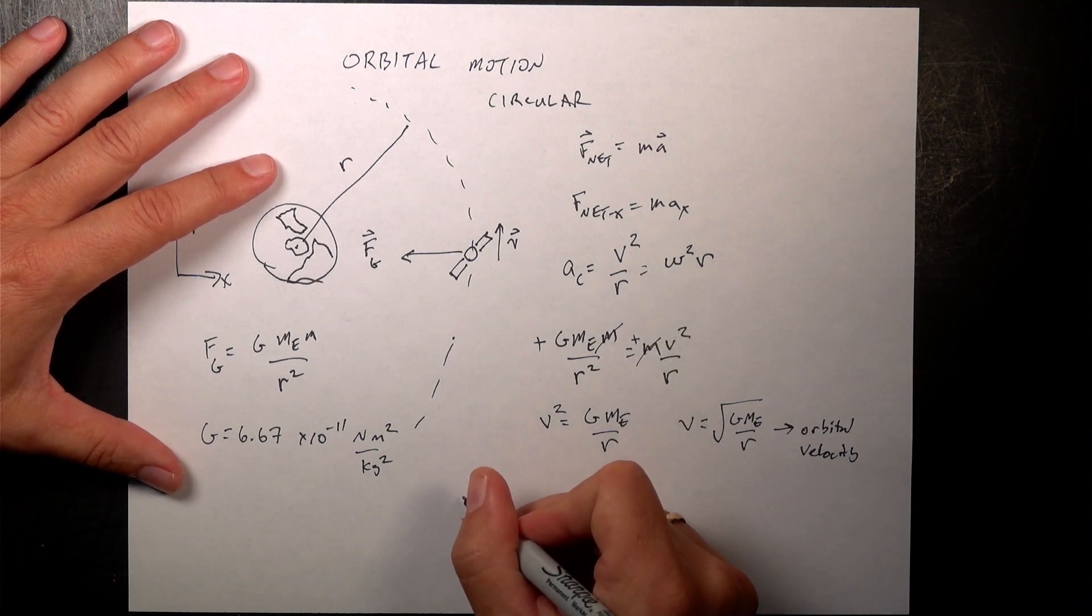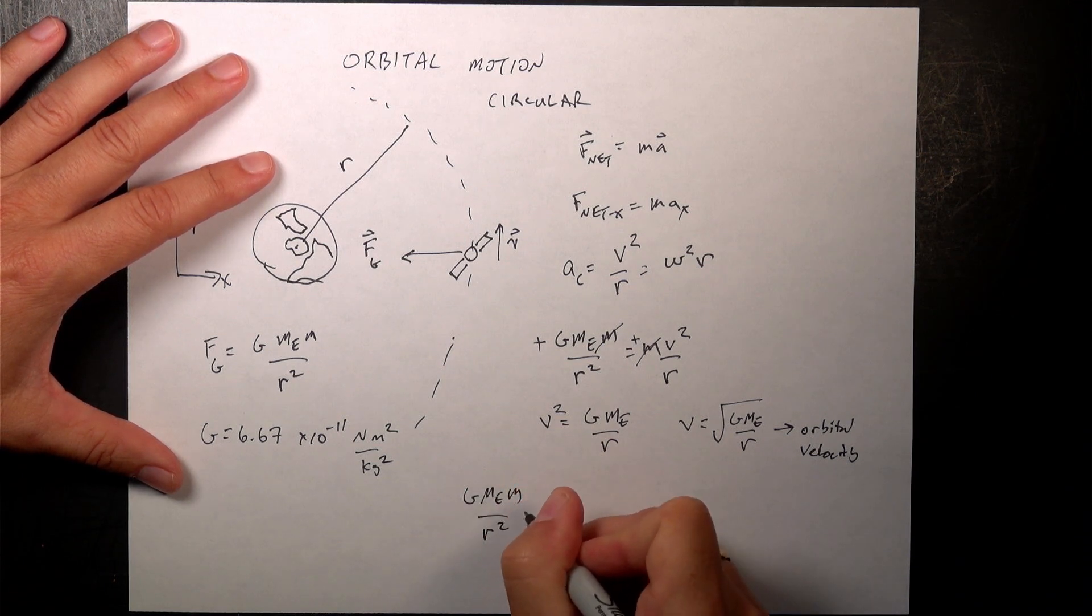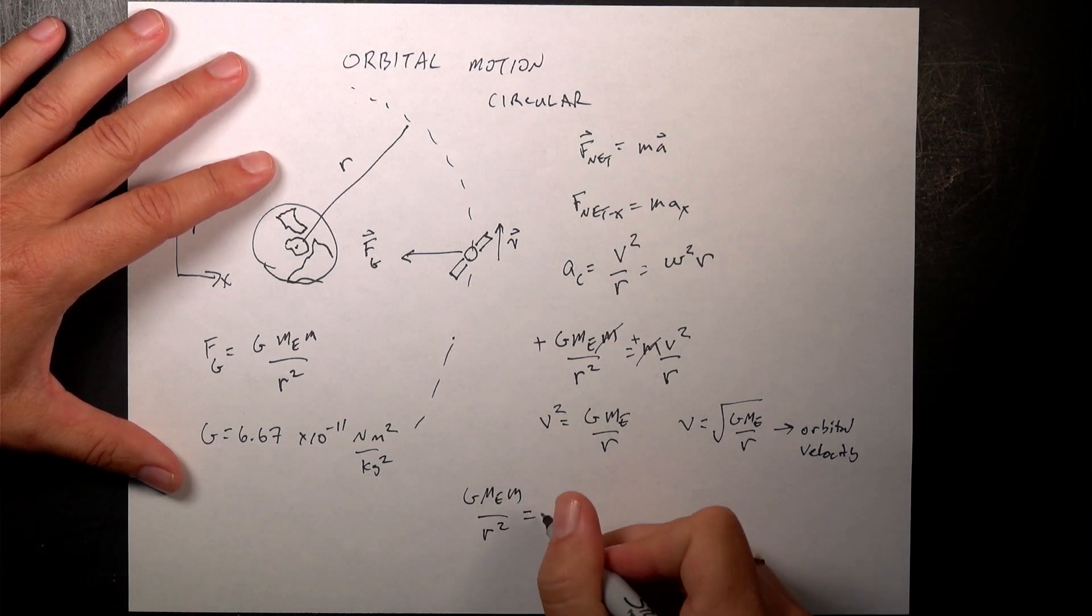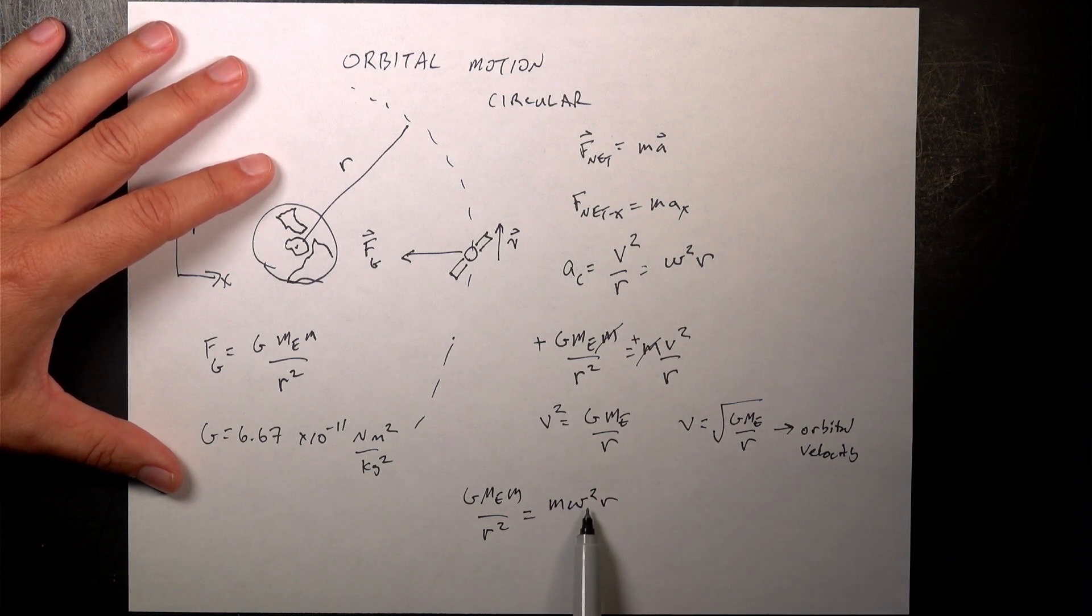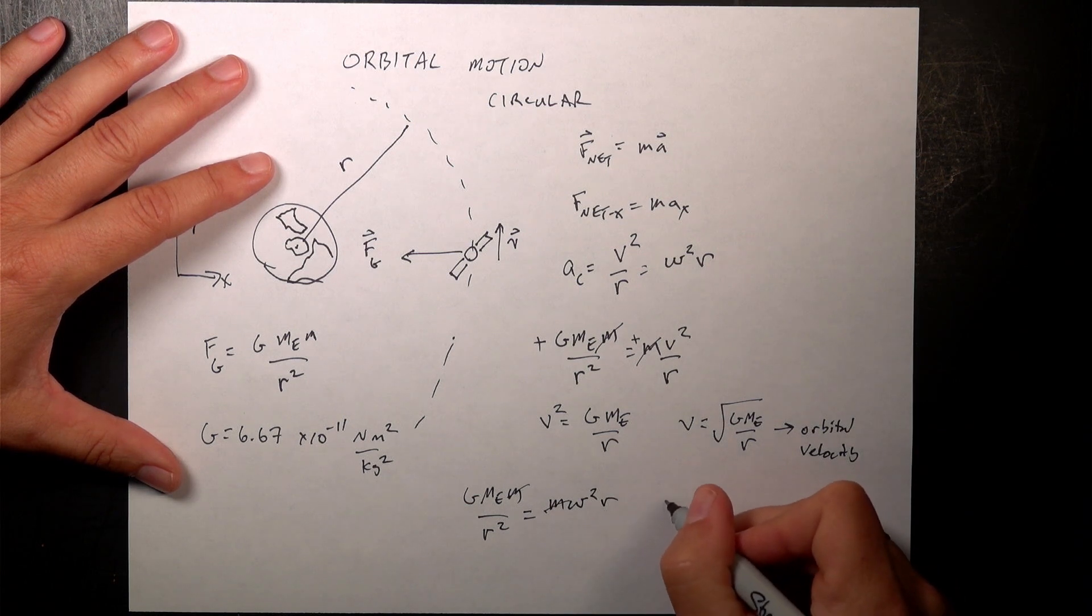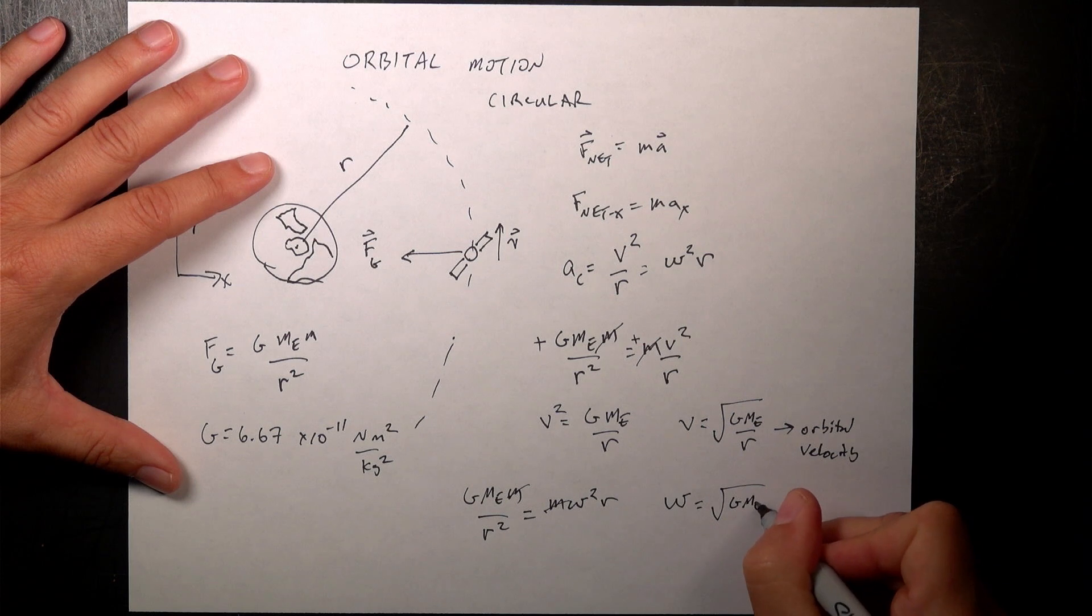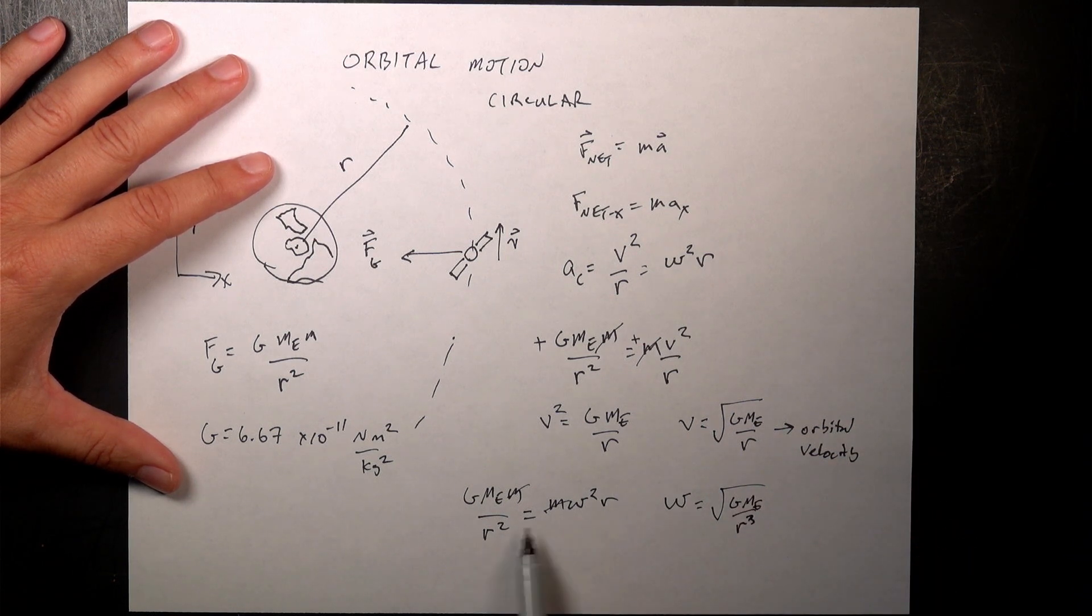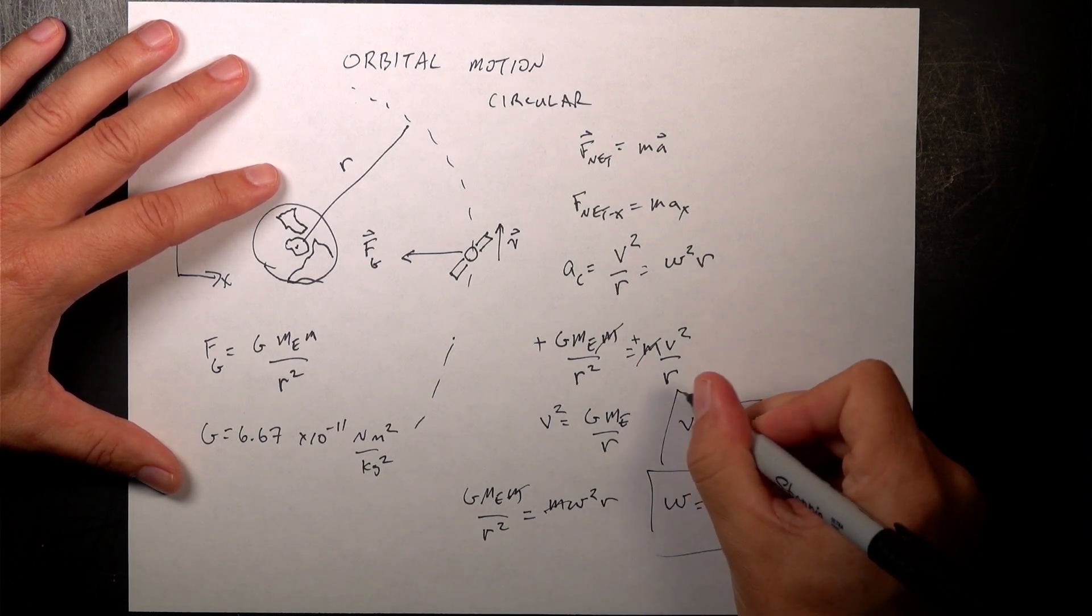So if I have the angular velocity, then this equation is going to be G mass of the Earth M over R squared. And I've already cancelled the negative sign. It's going to be mass of the satellite omega squared R. So in this case, the mass cancels. I divide both sides by R and take the square root and I get omega is the square root of GMₑ over R cubed. Right? Because now one of those R's don't cancel. So this is my angular velocity moving in a circle.